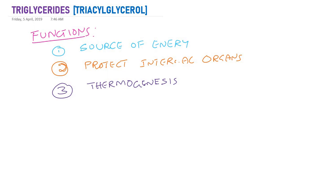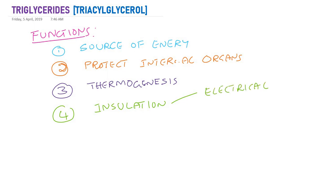In the nape of the neck of a newborn baby, there is brown adipose tissue, which is rich in triglycerides. As soon as the baby is born, these triglycerides undergo hydrolysis, releasing fatty acids that undergo metabolism and produce heat, helping keep the baby warm — acting as a natural incubator. This is thermogenesis. Triglycerides also act as insulation — electrical insulation in neurons for propagation of depolarization waves, and also as a thermal insulator, where subcutaneous triglycerides protect the body from cold.